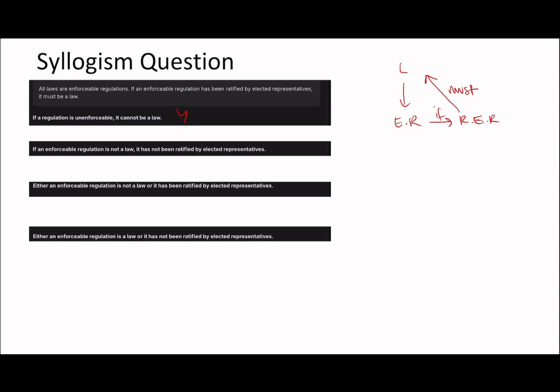'If an enforceable regulation is not a law, it has not been ratified.' We know that if it's not a law it has not been ratified by elected representatives. An enforceable regulation — if it's been ratified it must be a law, but if it's not a law therefore it cannot have been ratified. If it had been ratified it would have been a law, but we know it's not a law so it can't have been ratified, which is why this one is yes as well.